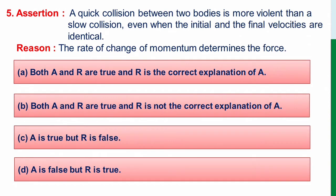Number 5. A quick collision between two bodies is more violent than a slow collision even when the initial and final velocities are identical. And reason: rate of change of momentum determines the force.